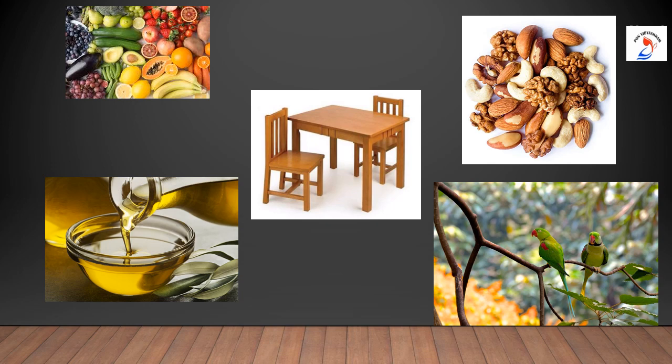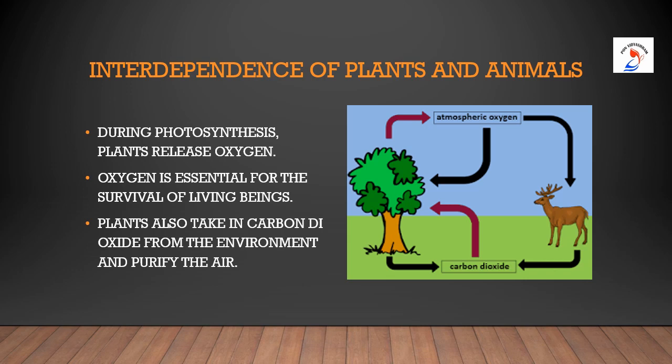Today we are going to learn about the uses of plants. Children, we know that plants are very important for life to sustain on earth. During photosynthesis, plants release oxygen. Oxygen is essential for the survival of living beings. In the same way, plants also take in carbon dioxide from the environment and purify the air. That's why we have to grow more plants.